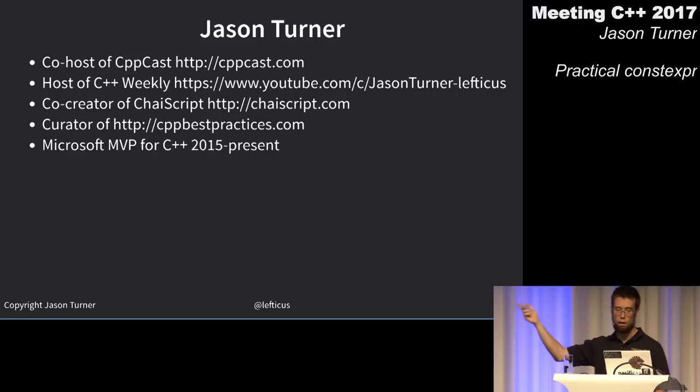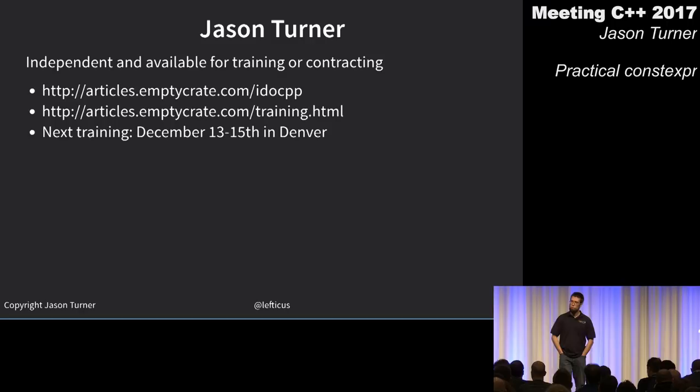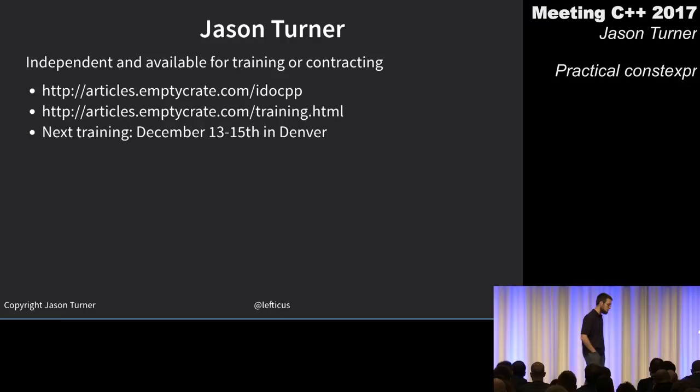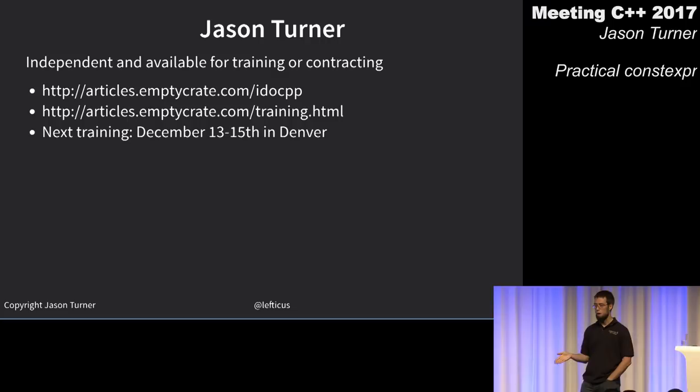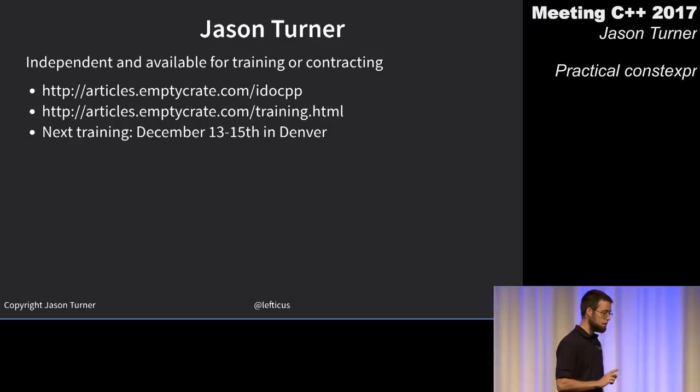Q&A: Why aren't virtual functions allowed to be constexpr? If a virtual dispatch needs to happen, you might not know the final type at compile time — but that logic implies final methods should be allowed to be constexpr, since no other implementation can come along.